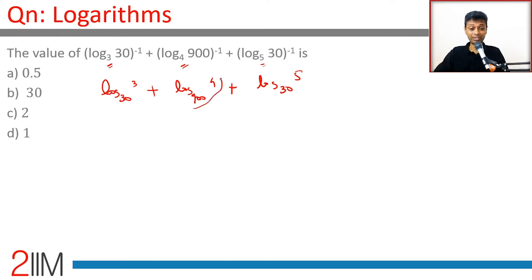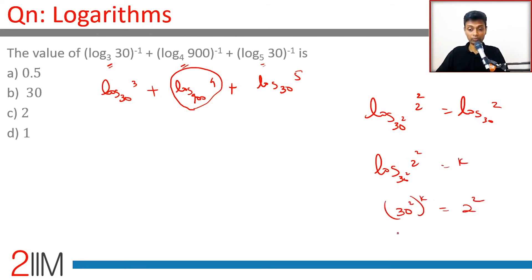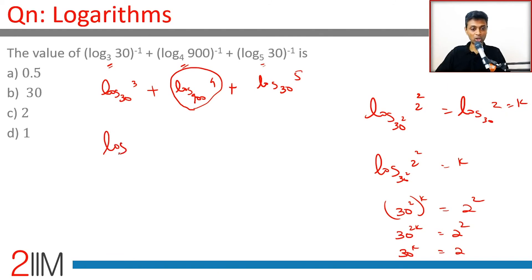Using the reciprocal property, we can represent this also as something to the base 30. This is log of 2 squared to the base 30 squared, which is nothing but log 2 to the base 30 — since 900 is 30 squared. If log 2 squared to the base 30 squared equals k, then 30 squared to the power k equals 2 squared, so 30 to the power k equals 2, confirming it equals log 2 to the base 30.